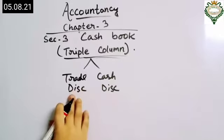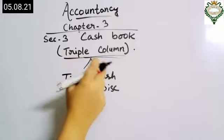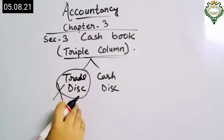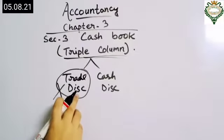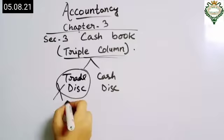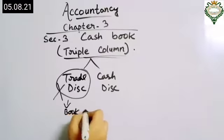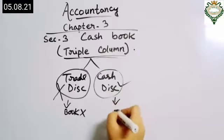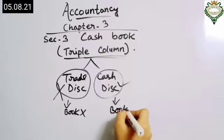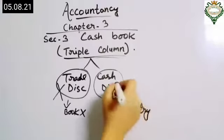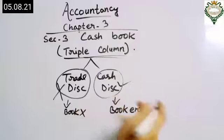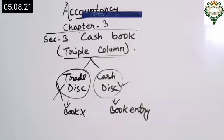Related to these two, we will be doing the triple column cashbook today. Trade discount will not be recorded in the books — we do the calculation for it but we will not record it. Cash discount, however, should be recorded in the book. We have to give the book entry for cash discount. So trade discount does not come into the book entry, but cash discount does. Now we will do a practical sum.